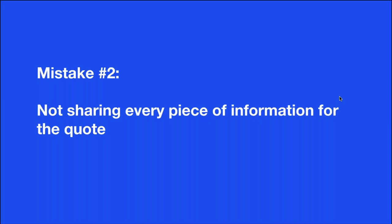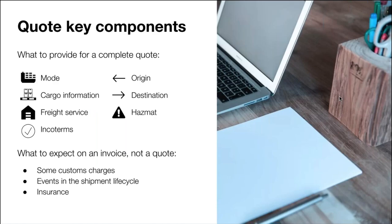Once you've clarified the parties, the second mistake is not sharing every piece of information important to get your pricing. The key components for getting a quote: we recommend providing the mode you want to ship, detailed cargo information like weight and dimensions, the freight service — whether port-to-port or door-to-door — the INCO terms, the detailed origin and destination address, and whether there are any hazmat goods. It's important to share those details because otherwise your freight forwarder will make assumptions. And if different forwarders make different assumptions, you won't be able to compare prices across providers.